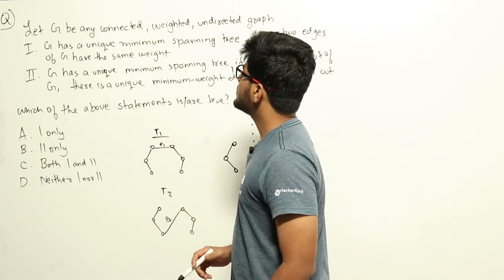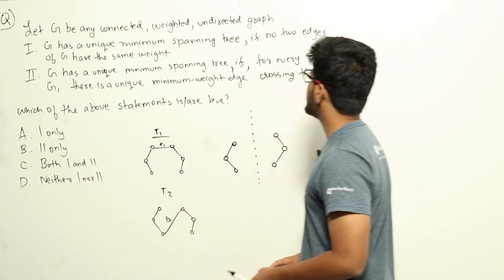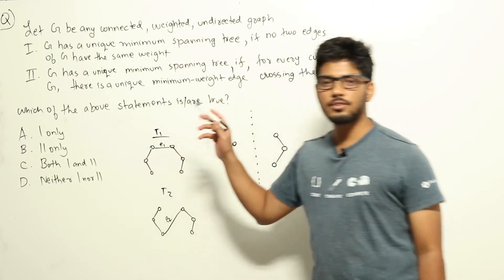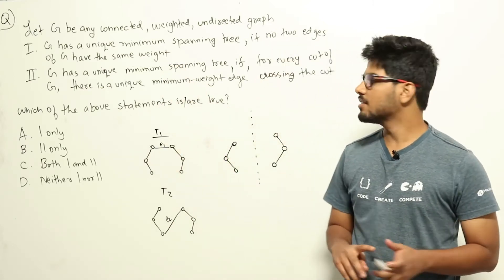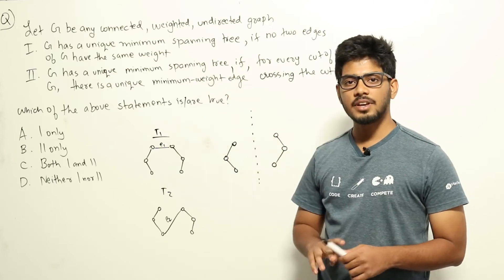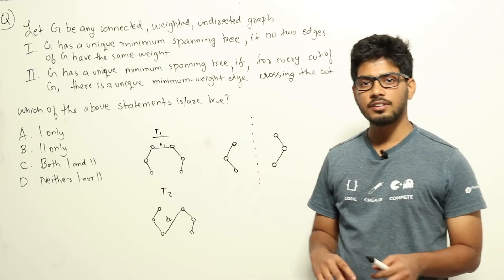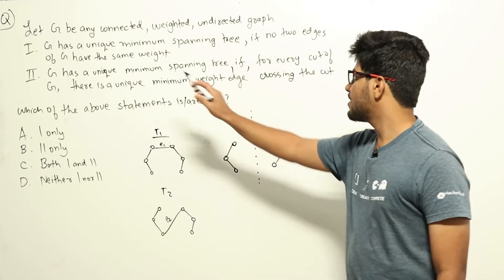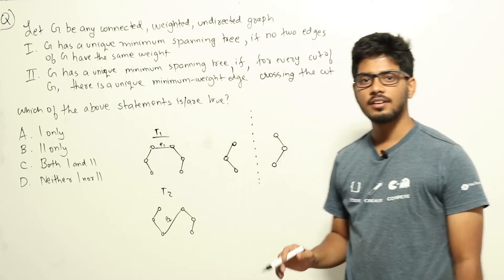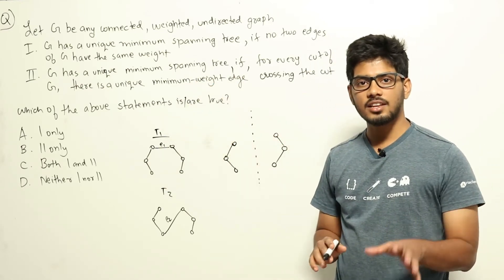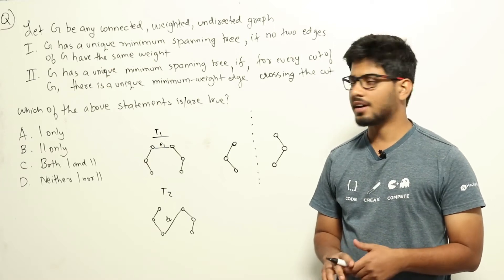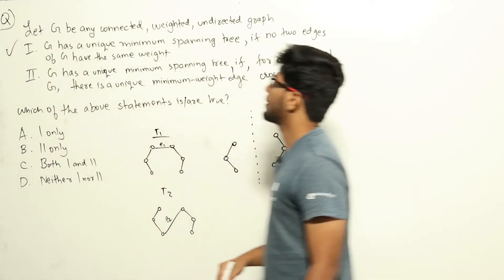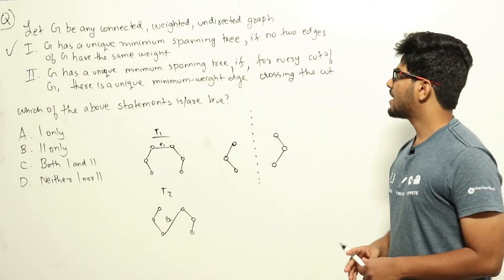Statement 1 says G has a unique minimum spanning tree if no two edges of G have the same weight. This statement is true. The reason is: if you consider Kruskal's algorithm, we sort all the edges based on their weights and then choose edges one by one to add to the minimum spanning tree. If all edges have different weights, Kruskal's algorithm will produce exactly one unique graph. So statement 1 is true.